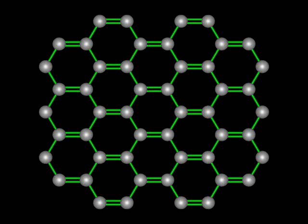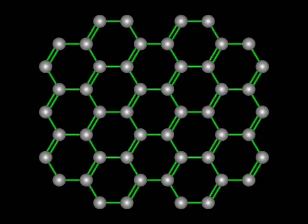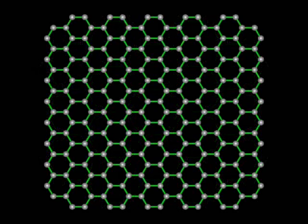Several different resonance structures can be drawn, depending upon the placement of the double bonds. In graphite, the carbon atoms are sp2 hybridized, with each carbon atom having a trigonal planar geometry. The atoms are connected to form a flat six-membered ring that extends indefinitely in two dimensions.